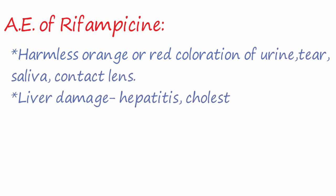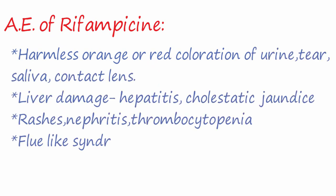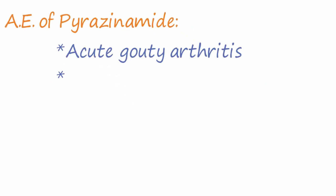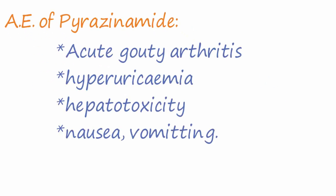Rifampicin can also cause liver damage, hepatitis, cholestatic jaundice, rashes, nephritis, thrombocytopenia, and a flu-like syndrome. The adverse effects of pyrazinamide include acute gouty arthritis, hyperuricemia, hepatotoxicity, and nausea and vomiting.